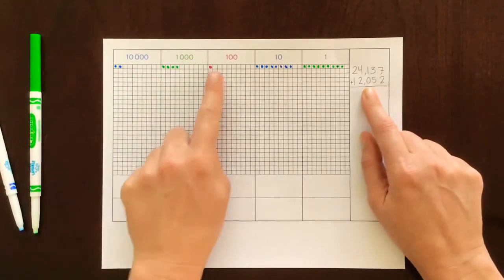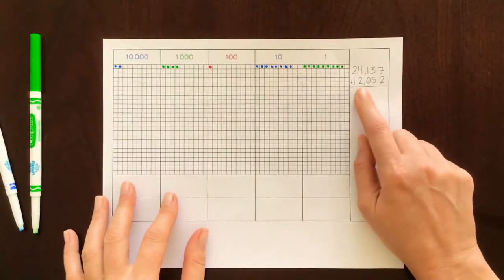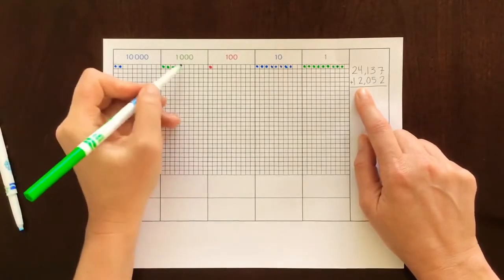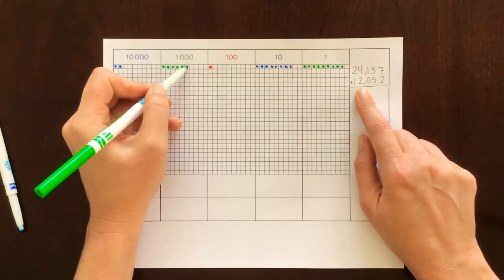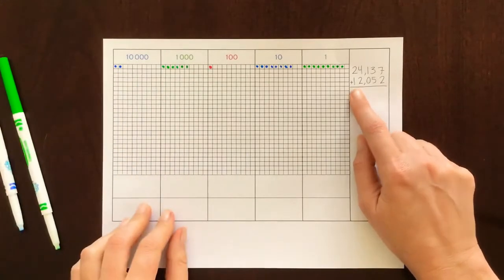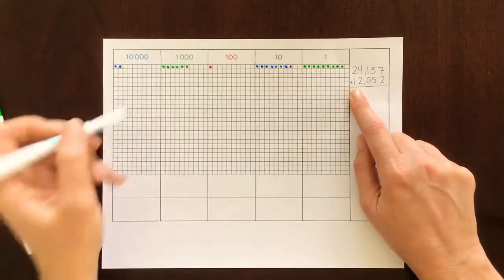And we have nothing in the hundreds place so we'll leave that blank. In the thousands place we have two. Let's add two dots. One, two. And in the ten thousands we have one dot.